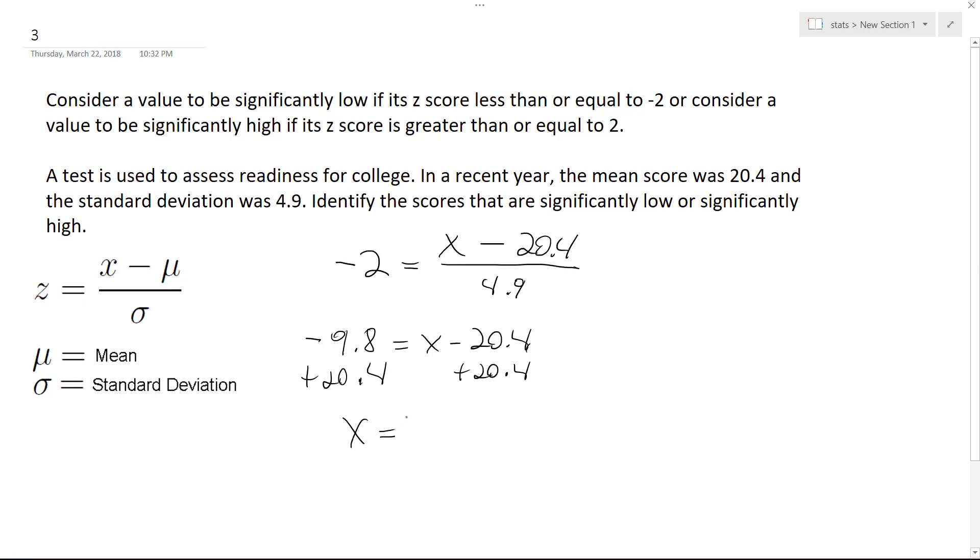So X is equal to 10.6 for low, significantly low, and basically we just do the same thing.